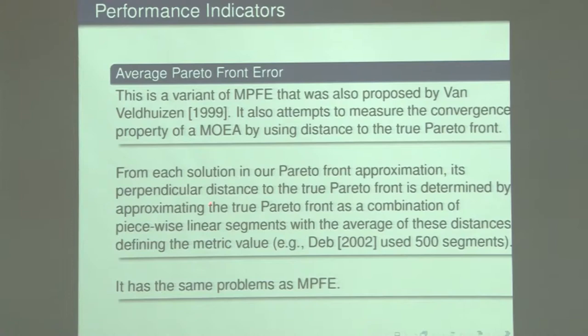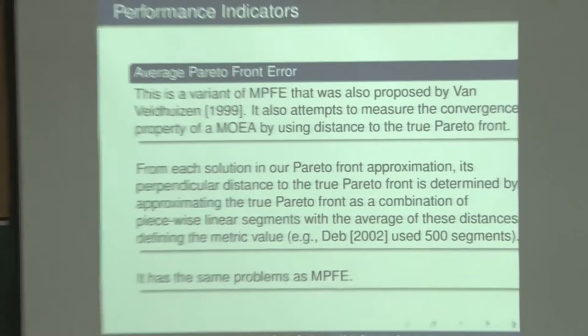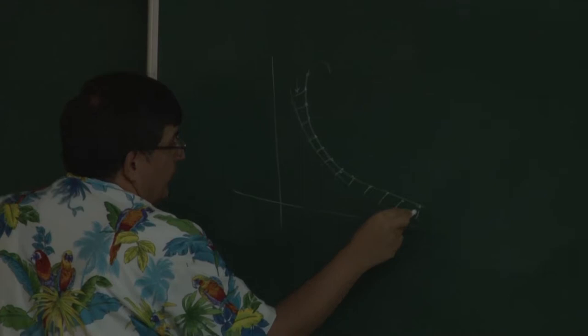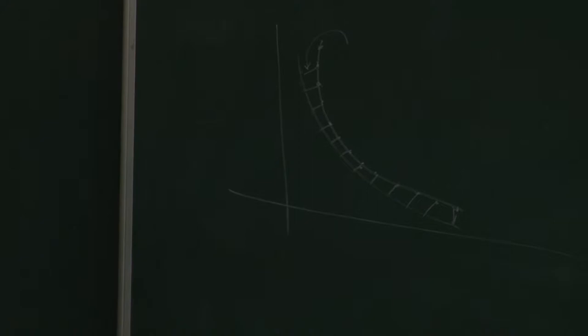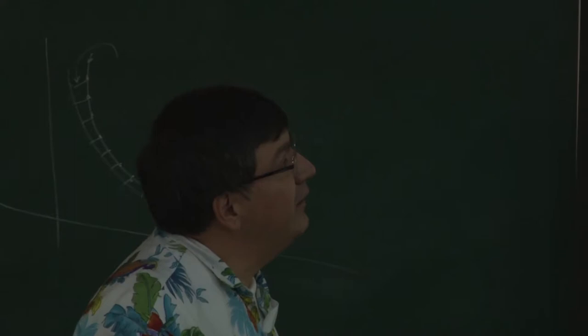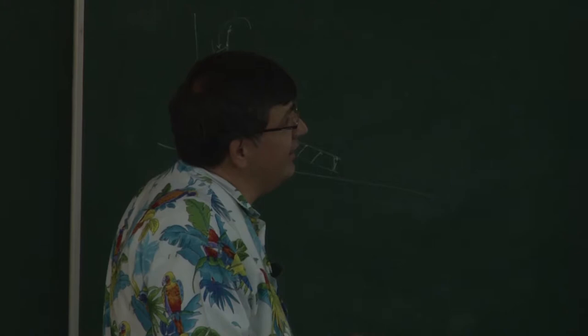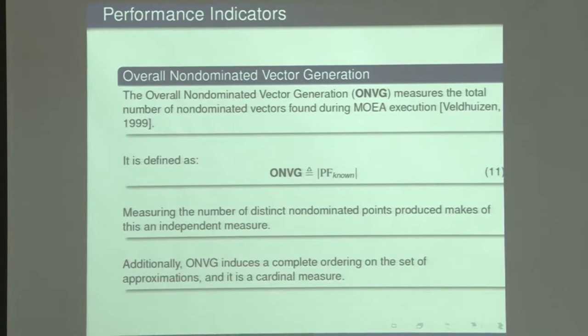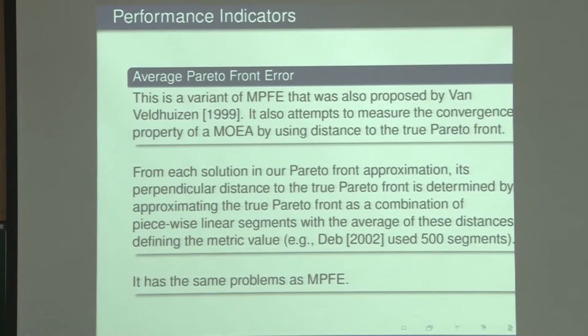The average Pareto front error is a variation in which, for each solution, we find its perpendicular distance to the true Pareto front, use a combination of piecewise linear segments, and take the average of these distances as the metric. Instead of only the maximum value, you measure this for every point and get the average. This tries to solve the bias problem of the original indicator — if you only take the maximum it's highly biased, but the average should be somewhat better.